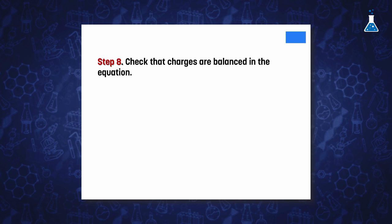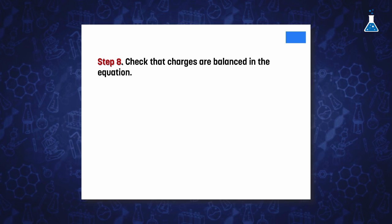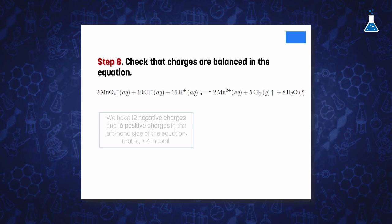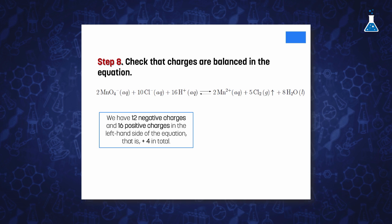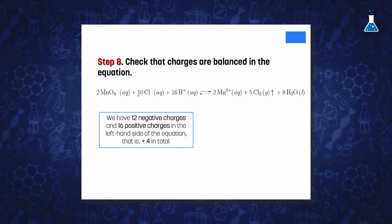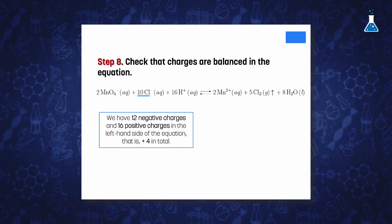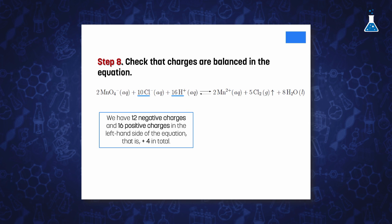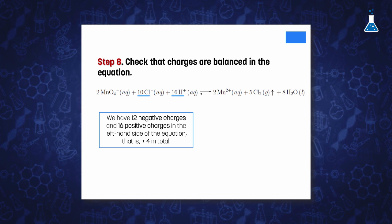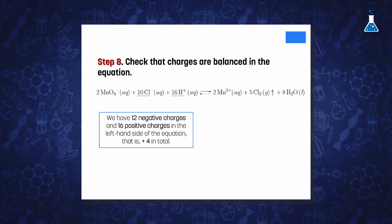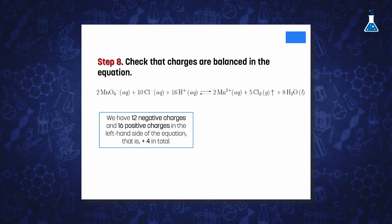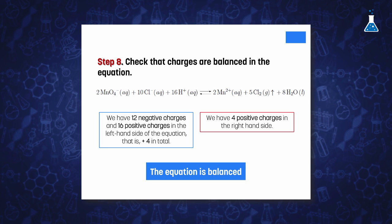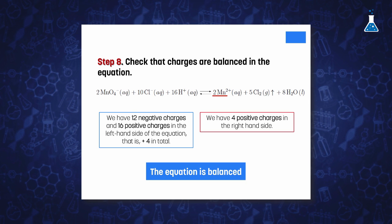It is quite convenient to do, as our last step, check if the equation is balanced with respect to charge. In our case, we have 4 positive charges on the left-hand side as a result of subtracting the 10 negative charges of chlorine ions and the 16 positive charges of protons. This net positive charge of plus 4 on the left side of the equation will exactly balance with the plus 4 charge on the right-hand side of the equation, generated by the two manganese ions with charge plus 2.